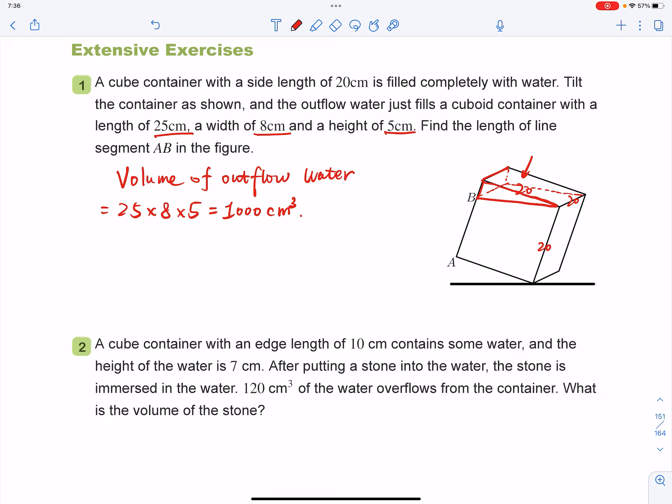And now we want to get the length of AB, right? If you want to get AB, let's mark this point as C. You can get BC first and then use 20, take away that, you got AB.